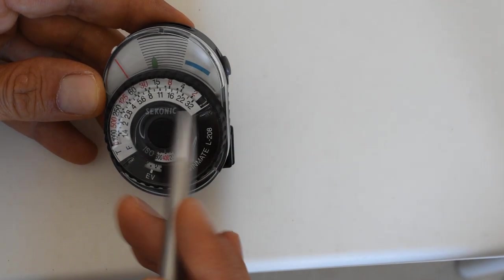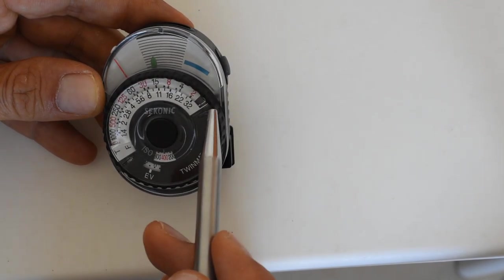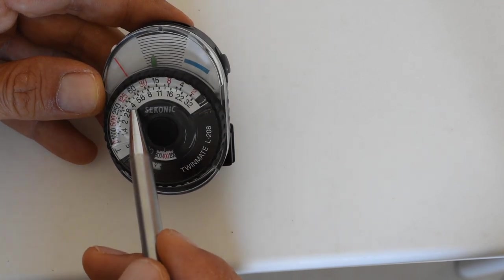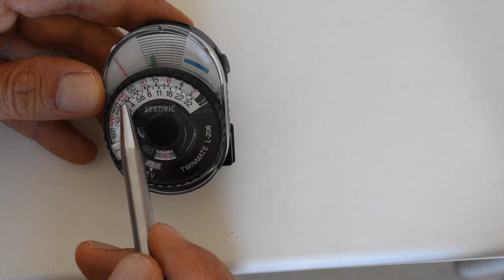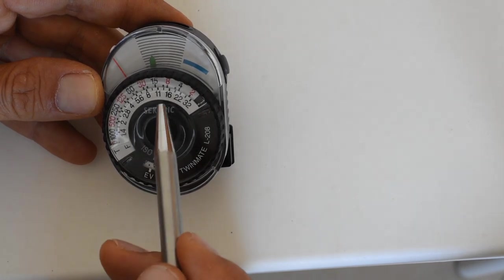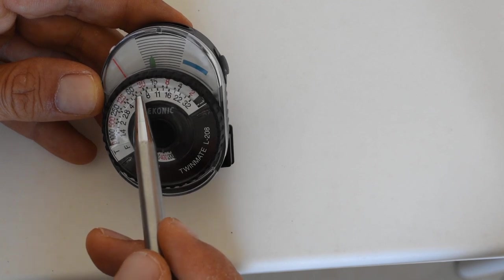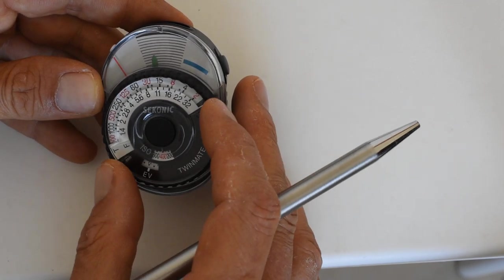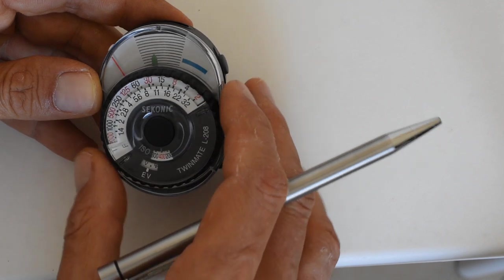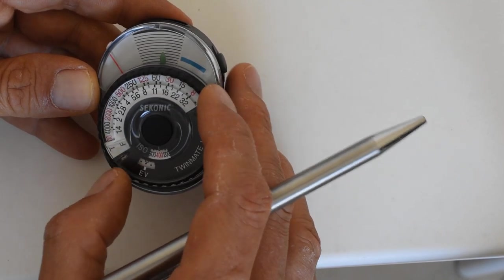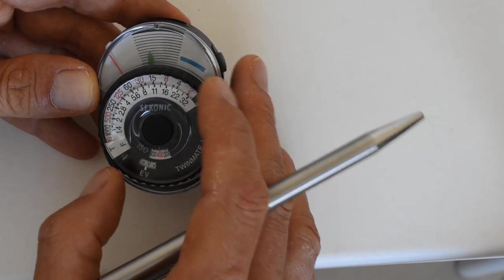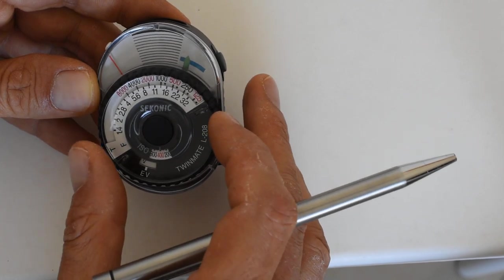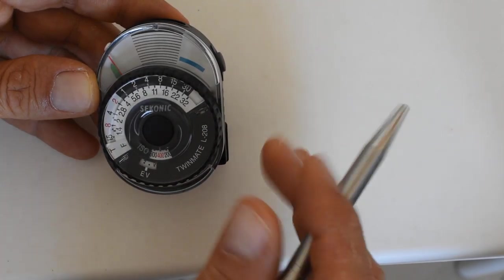That is going to give me a range of shutter speed and aperture values. For example, at this light reading if I want to use an aperture of f/4, then my closest shutter speed is going to be just under 1/125. Or f/8, my closest shutter speed is going to be just under 1/30. F/1.4 is going to be just under 1/1000.